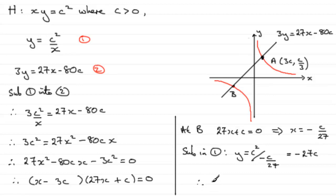So the coordinates of B then are going to be minus C over 27 for the X coordinate and the Y coordinate is minus 27C.